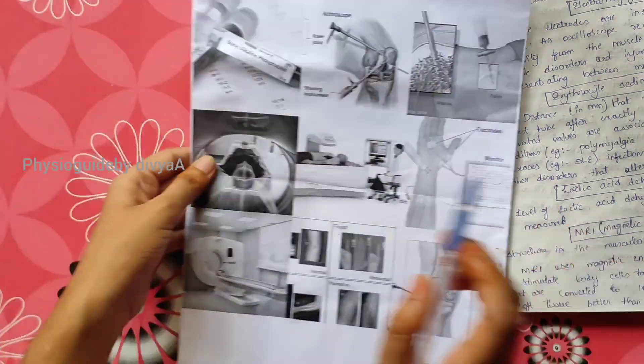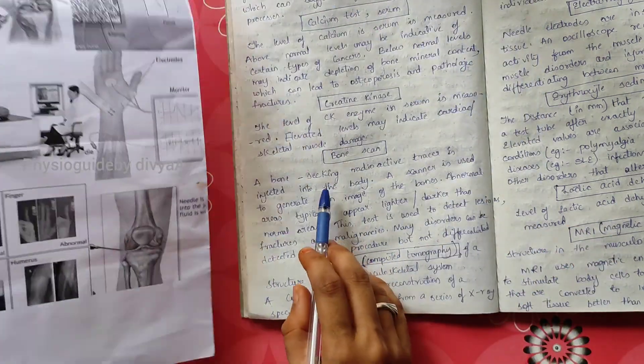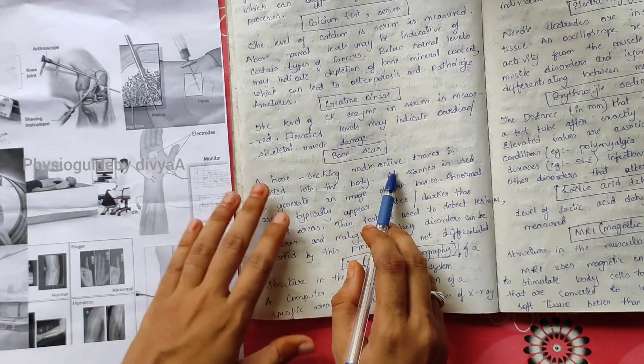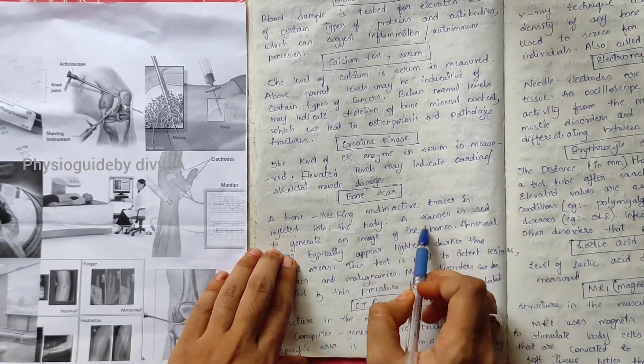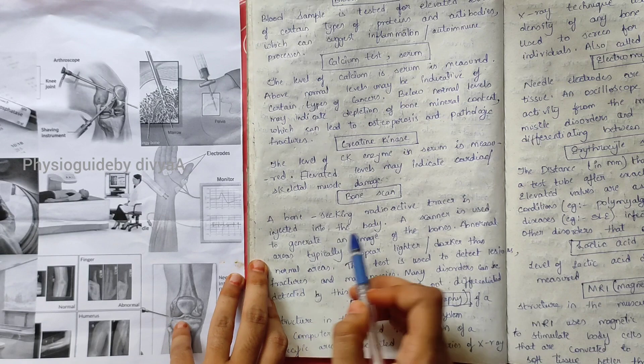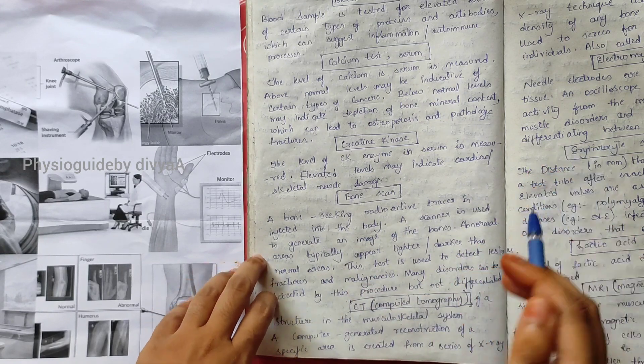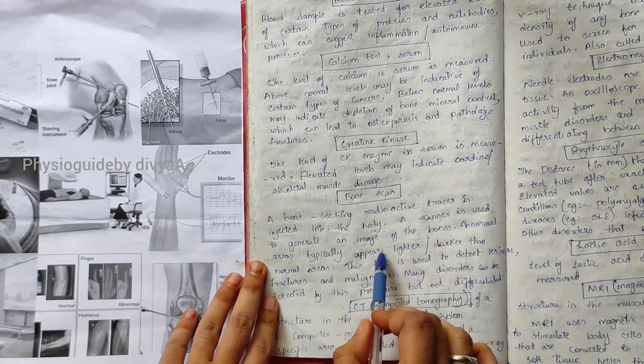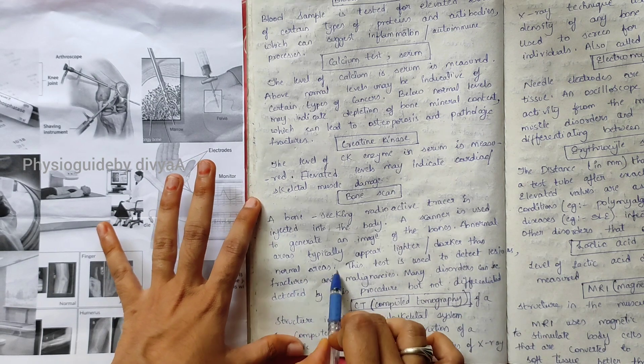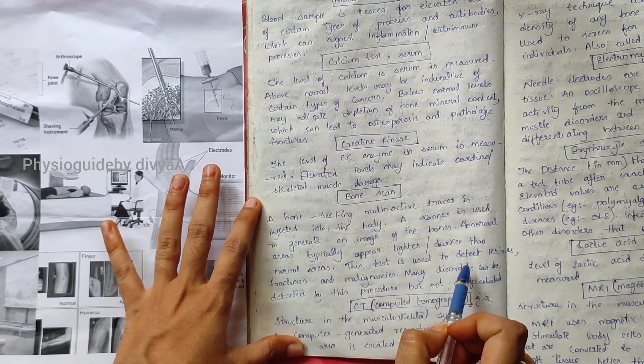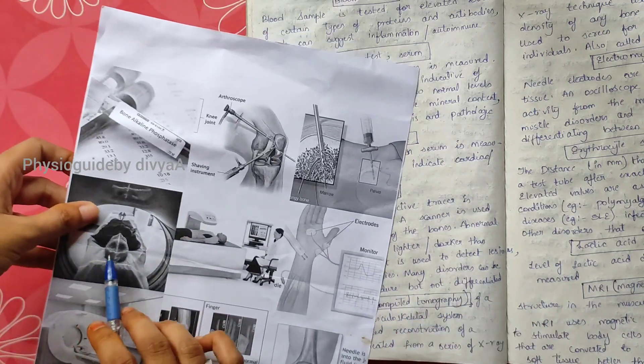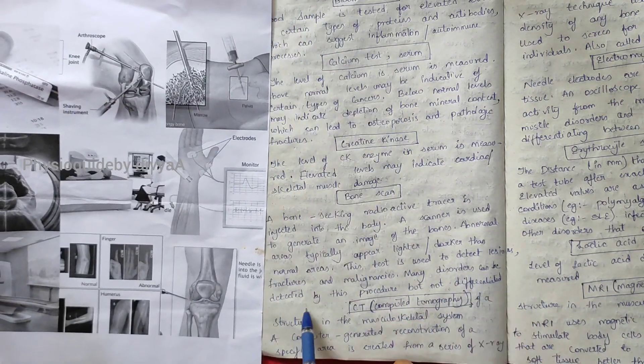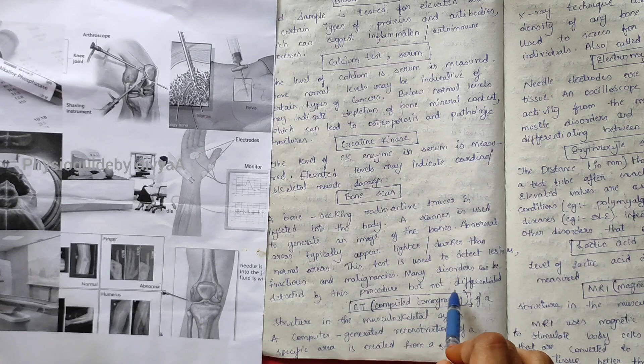Bone scan: a bone-seeking radioactive tracer is injected into the body. A scanner is used to generate images of the bones. Abnormal areas typically appear lighter or darker than normal areas. This test is used to determine lesions, fractures, and malignancies.